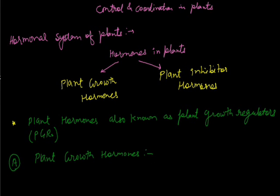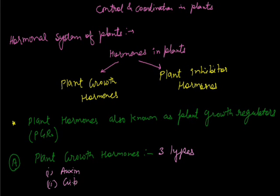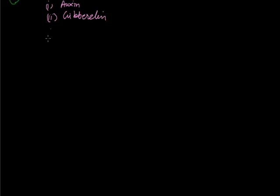Now we will discuss these both categories in detail. The first one is plant growth hormones. Plant growth hormones are of three types: the first one is auxin, the second one is gibberellin, and the third one is cytokinin. Plant growth hormones are those hormones which promote the growth of the plant.